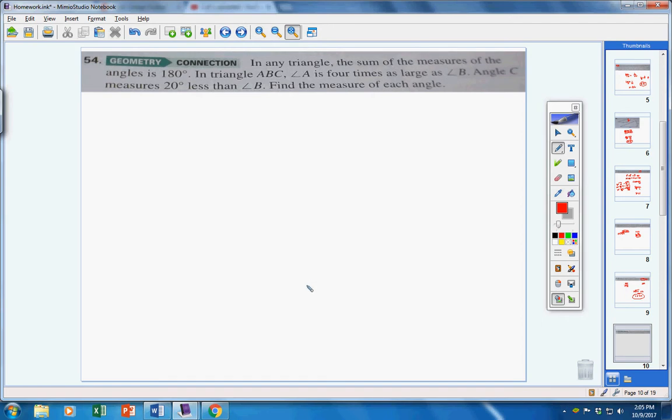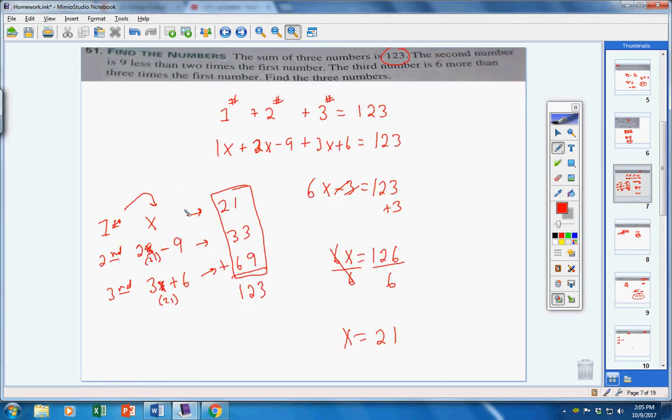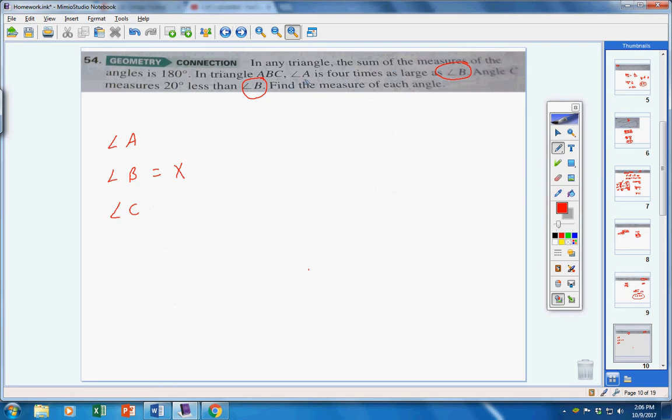Number 54. In any triangle, the sum of the measures of the angles is 180. Look how all this information is based on angle B. Angle A is 4 times as large as B. Angle C measures 20 less than B. So, these angles are based on letter B. I'm going to call B my X. In my other problem like this, everything was based on the first number. The second number is 9 less than 2 times the first number. The third number is 6 more than 3 times the first number. So, I call my first number X.